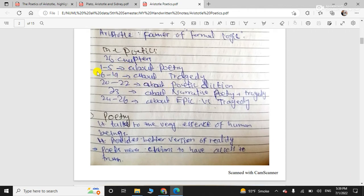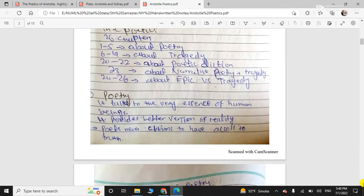And then the Poetics, what will we see? Twenty-six chapters. Chapter one to five is about poetry. Six to nineteen is about tragedy. And twenty to twenty-two is about poetic diction. Twenty-three is about narrative poetry plus tragedy. Twenty-four to twenty-six is about epic and tragedy, their difference.